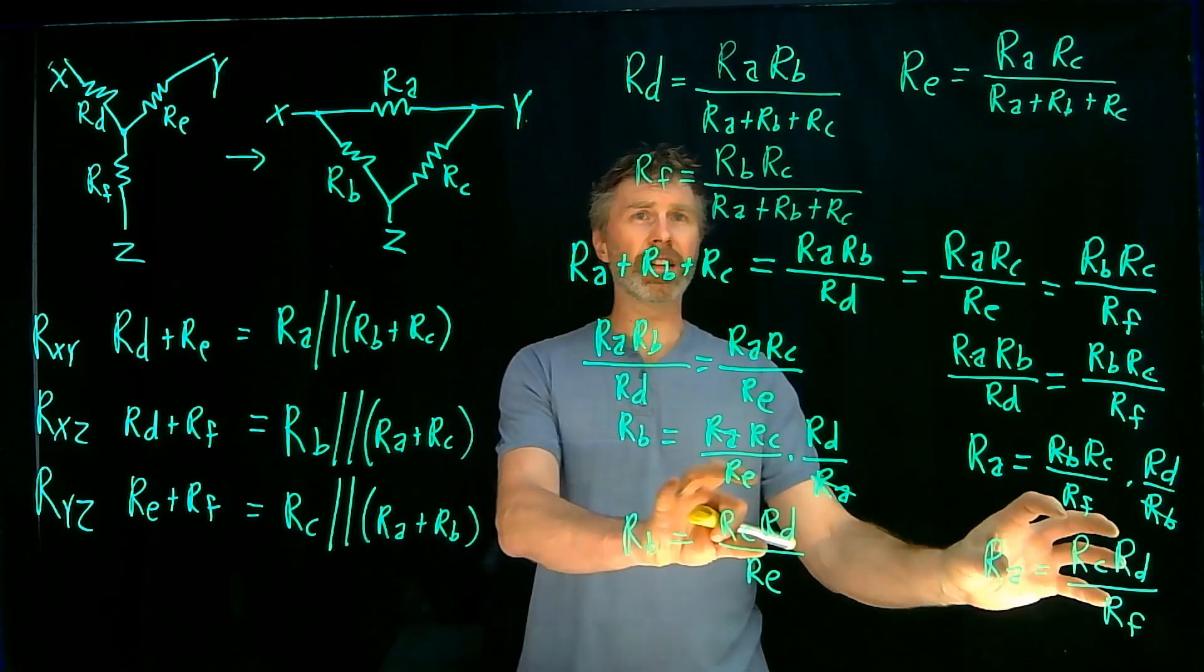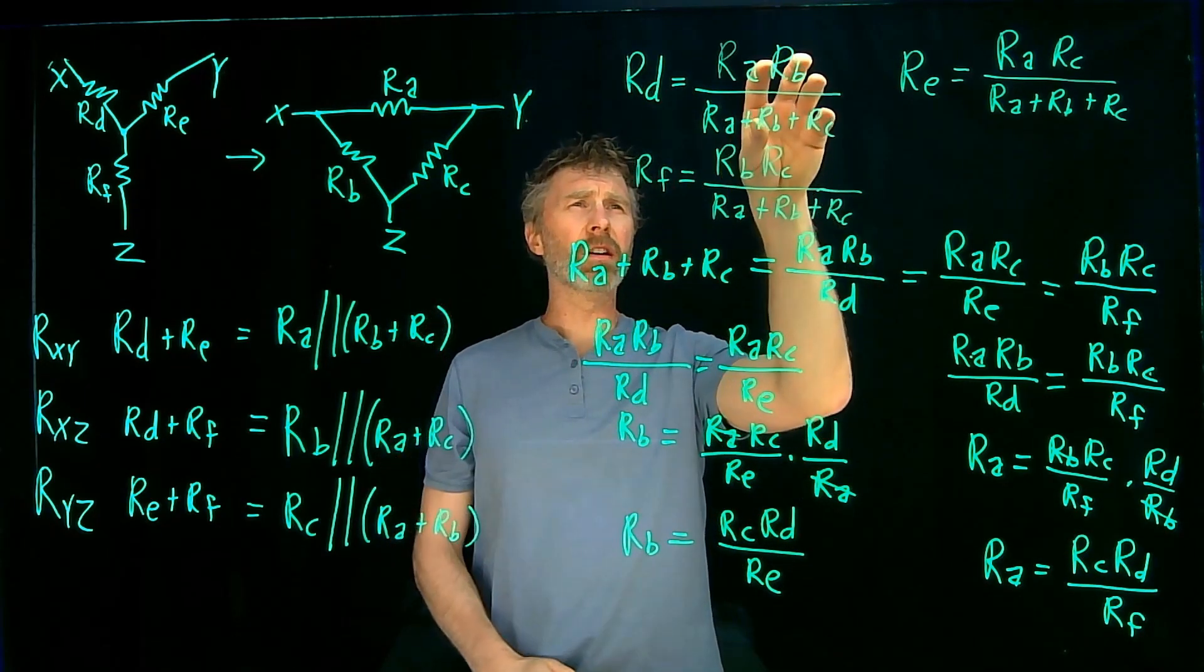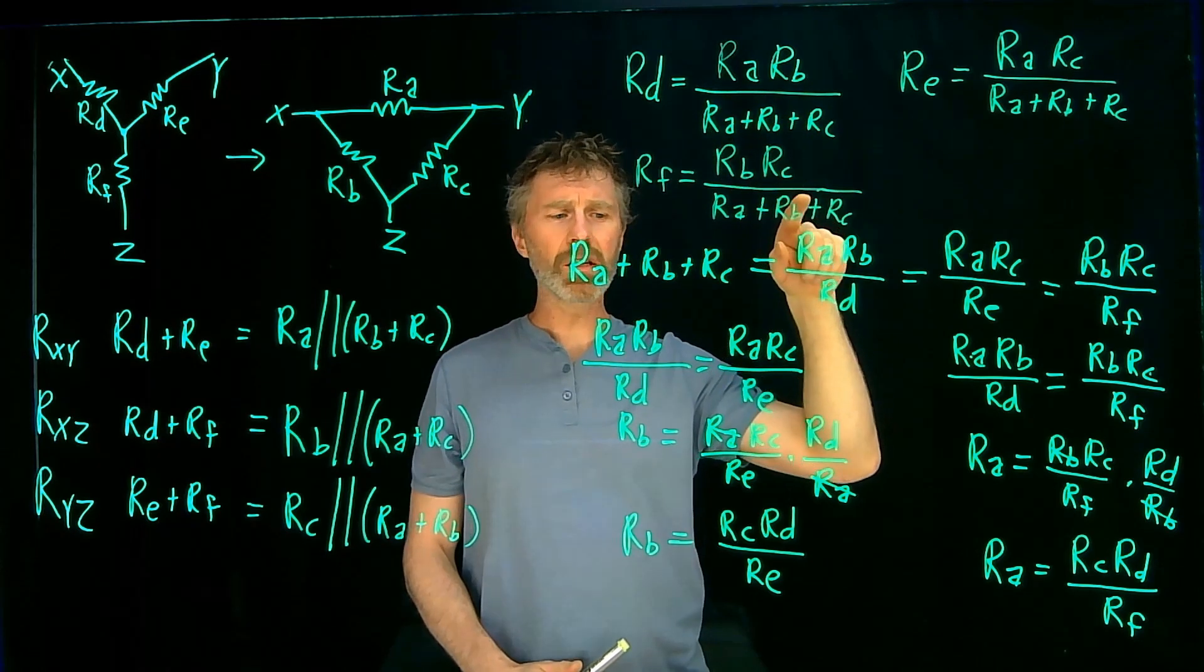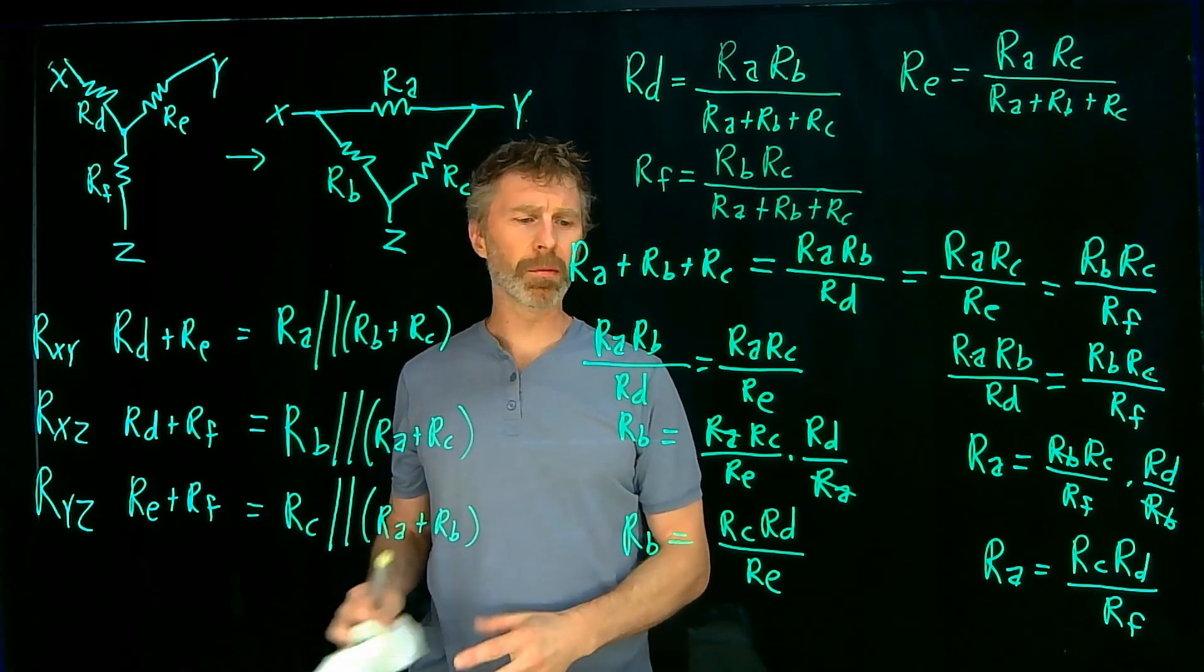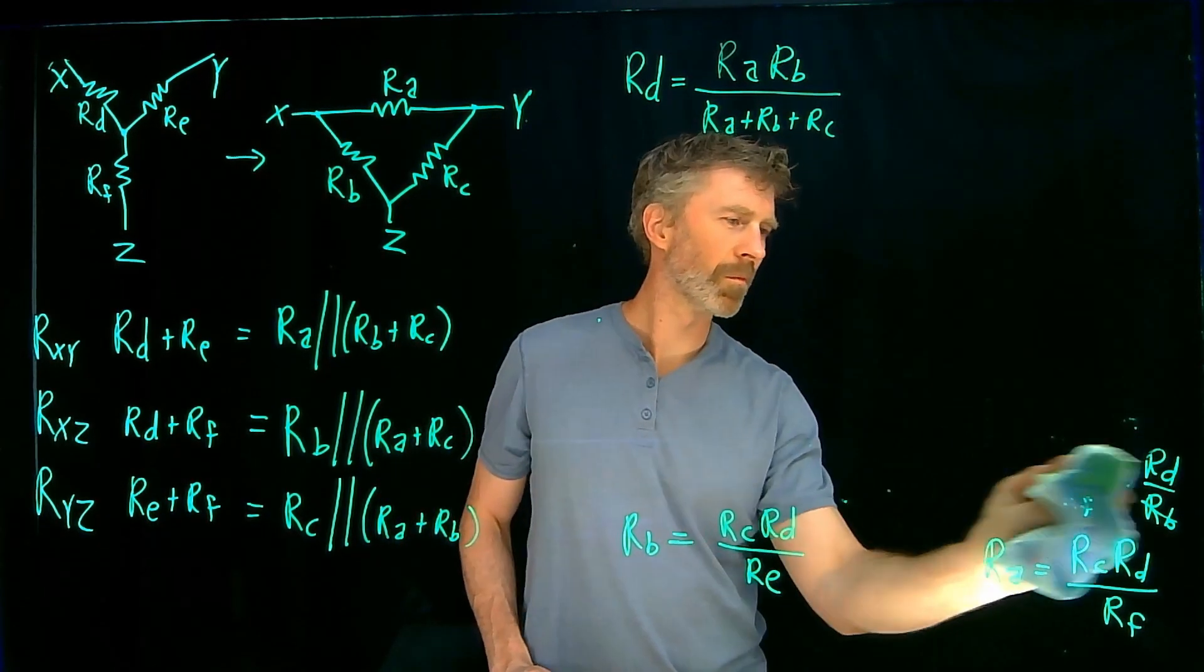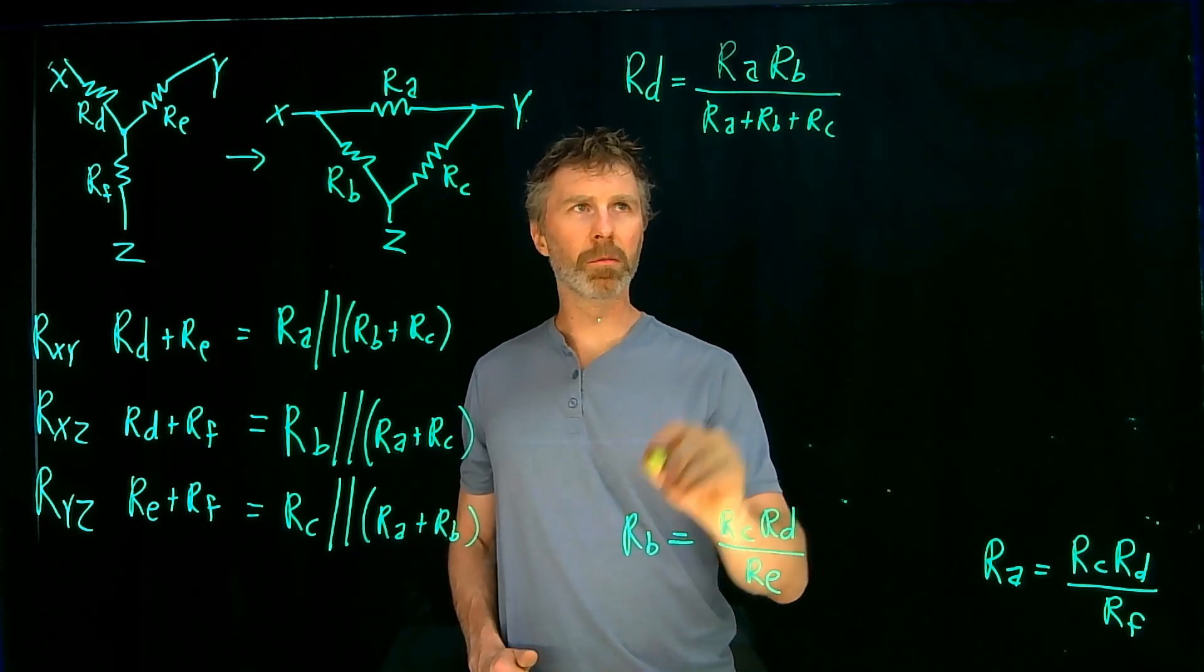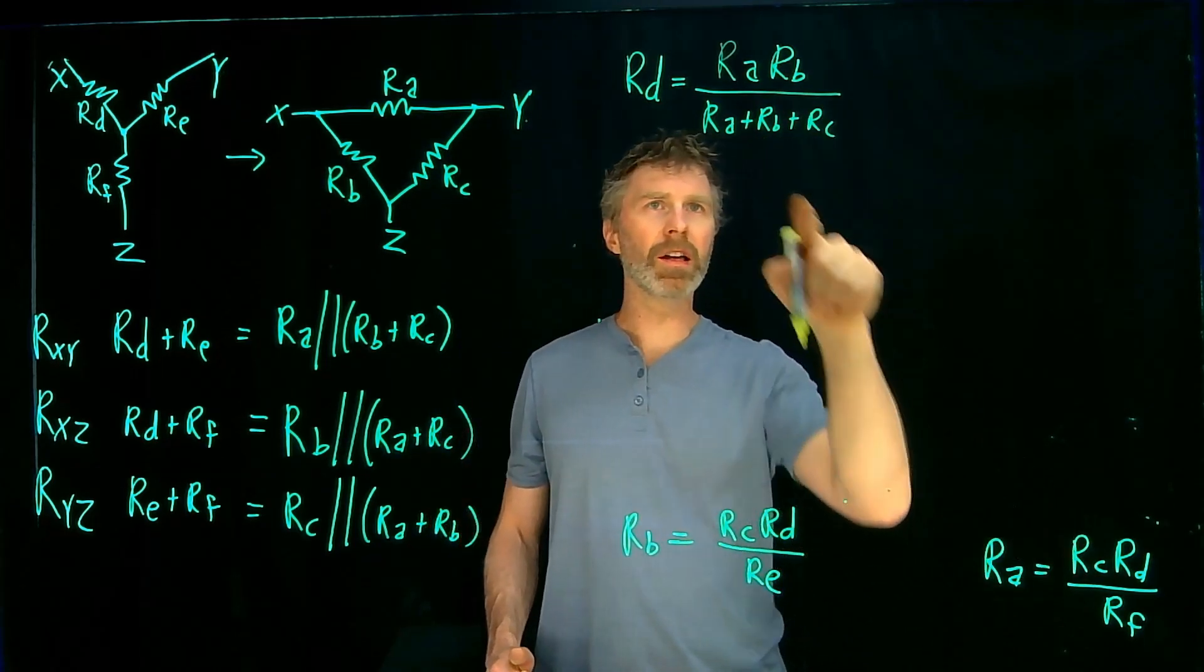So now I have an RB in terms of CD and E and an RA in terms of CD and F. And so if I take those and I put them into this expression, then I'll have an expression with just CD, E and F and I can solve for C. And then I'll have that first step.